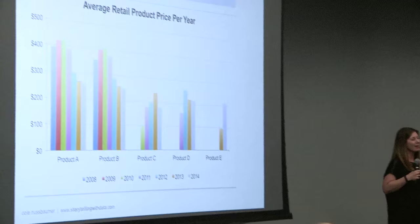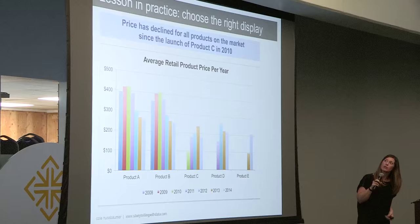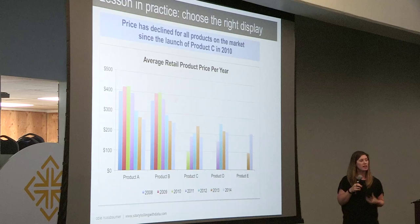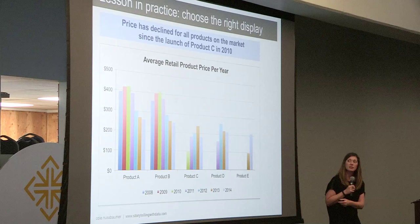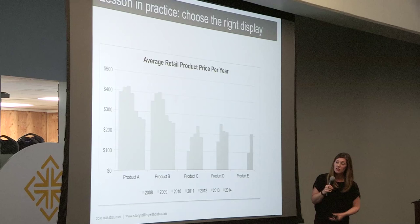Let's go back now to the example — you're wanting to get input on product pricing based on the competitive landscape. Your colleague came to you with this lovely graph, and we're trying to think about how do we turn this into a story. There's a lot going on here, so much that it's hard to concentrate on anything. We do have one call-out at the top: price is declining for all products on the market since the launch of product C in 2010. I'm going to go through a couple of iterations — first, I'm going to take away all of the color so we can focus more easily on the trend over time.